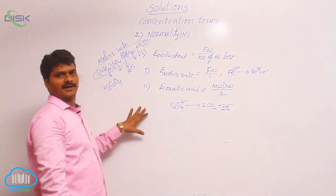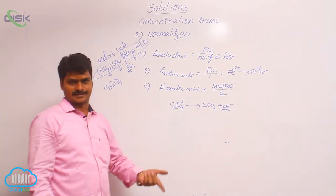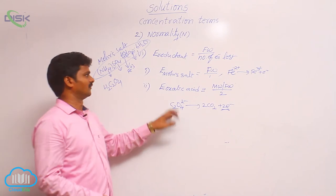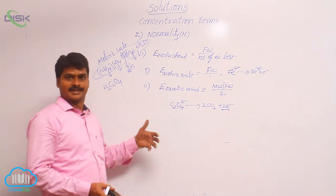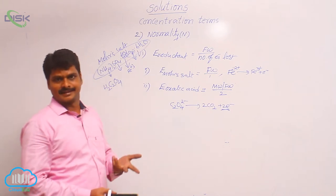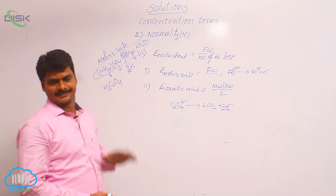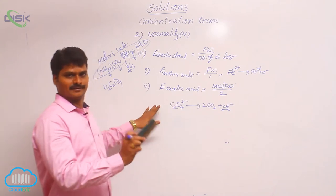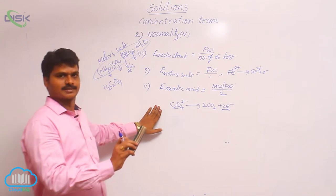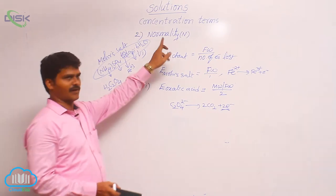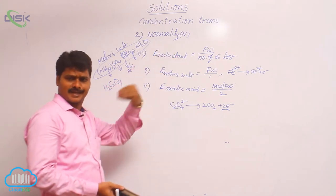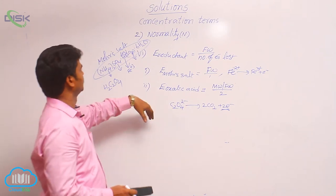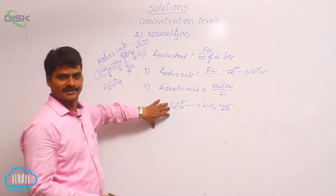In summary, equivalent weight of a substance depends on its nature — whether it is an acid, base, salt, oxidant, or reductant. For an acid: molecular weight by basicity. For a base: molecular weight by acidity. For a salt: formula weight by number of charges (total cation or anion charge). For an oxidant: formula weight by number of electrons gained. For a reductant: formula weight by number of electrons lost.